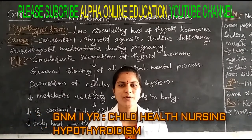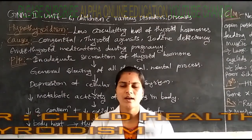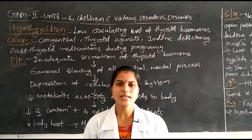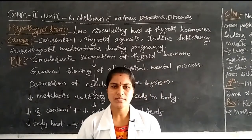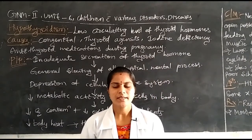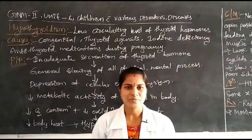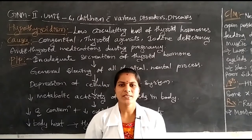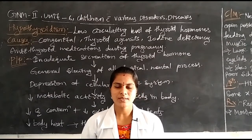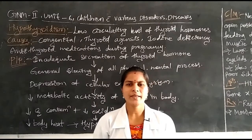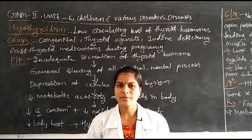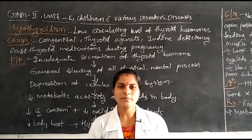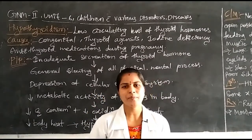We are going to discuss one new disease condition: hypothyroidism in children. It is one of the childhood disorders covered in the sixth unit — children with various disorders and diseases — in the child health nursing subject. Hypothyroidism is a hormonal disorder from the endocrine system, specifically involving the thyroid gland.